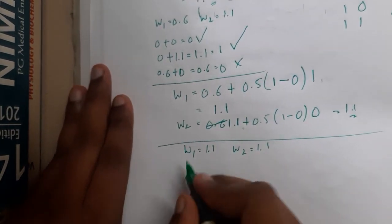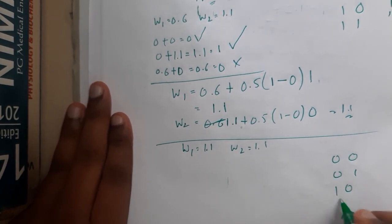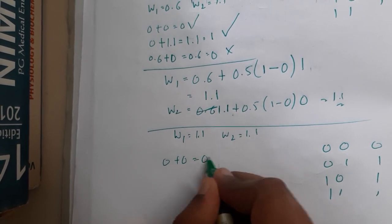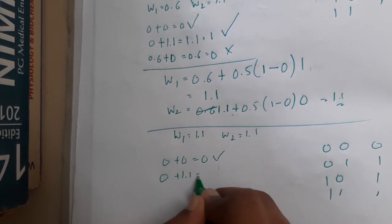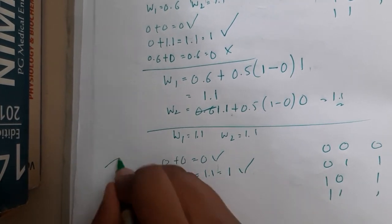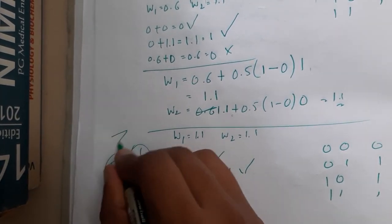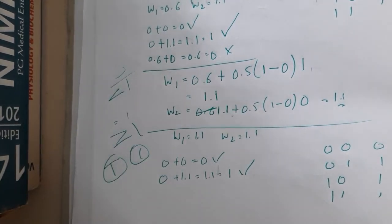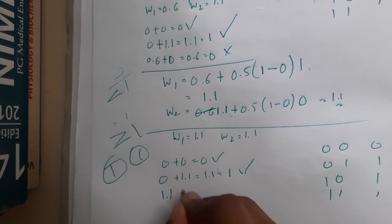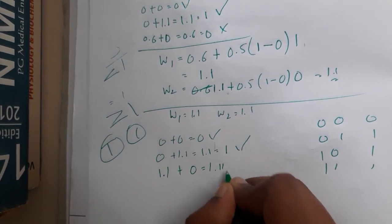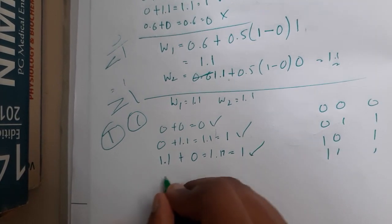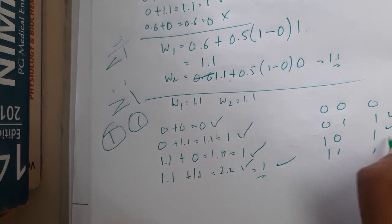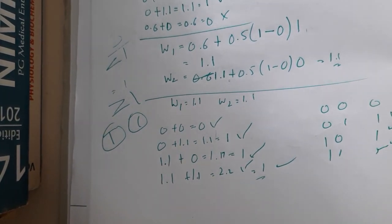Let us continue. Again 0 0 gives 0, 0 1 gives 1, 1 0 gives 1, 1 1 gives 1. Start multiplying: 0 plus 0 equals 0, satisfied. 0 plus 1.1 equals 1.1, which is 1, satisfied. Here the threshold is 1, so whenever it is greater than or equal to 1, we give the result as 1; if it is less than 1, we give 0. Again 1.1 equals 1, satisfied. And 1.1 plus 1.1 equals 2.2, also greater than 1, satisfied. We got the exact result.